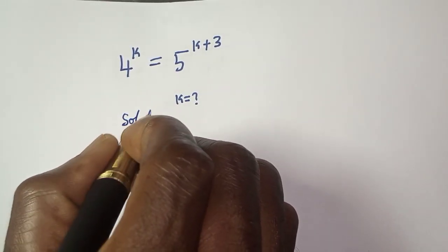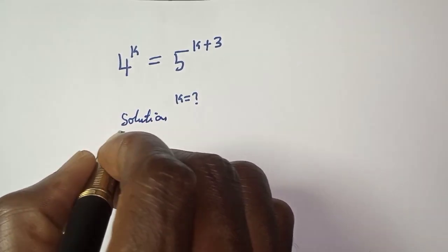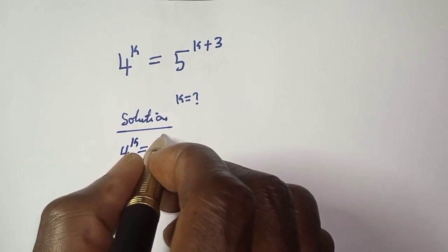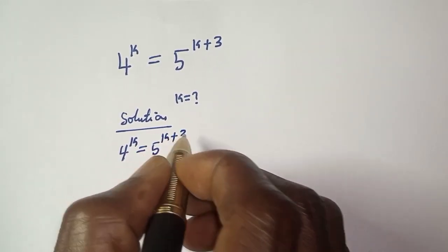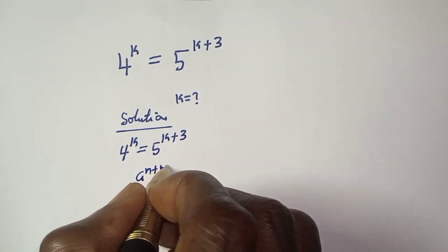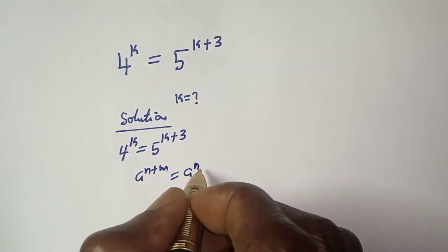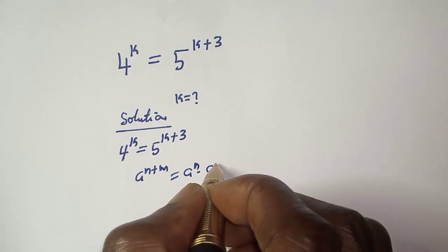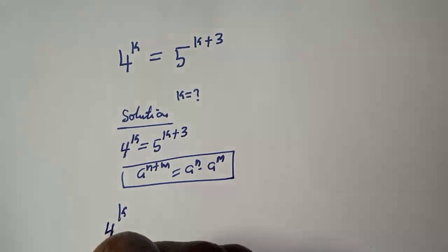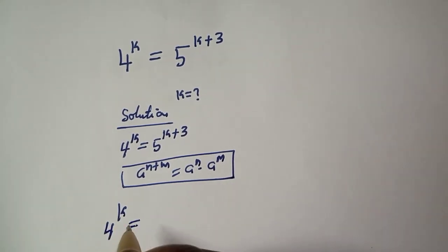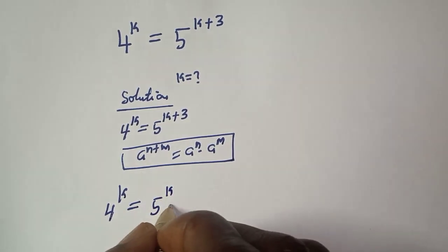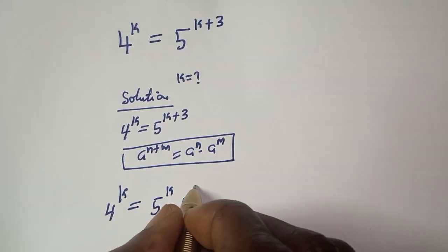Solution. 4 raised to power k is equal to 5 raised to power k plus 3. Now, if you have a raised to power n plus m, this is equal to a raised to power n multiplied by a raised to power m. So 4 raised to power k is equal to 5 raised to power k multiplied by 5 raised to power 3.